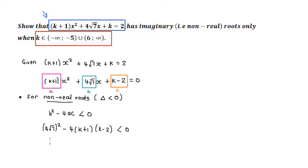When we square the term 4 root 7, it's the same as distributing the exponent of 2 to both the base 4 and the root 7. Squaring root 7 gives 7, so we have 7 times 4 squared. Since 4 squared is 16, on your calculator evaluate 16 times 7, which gives 112.